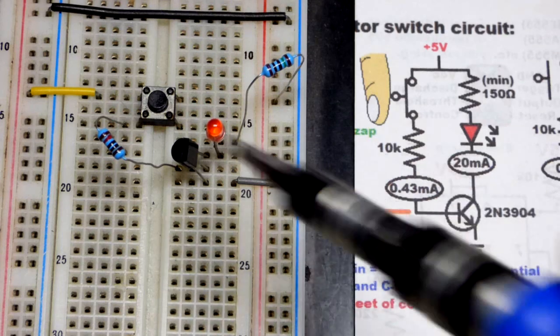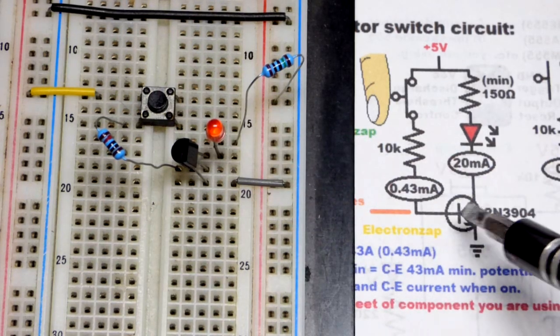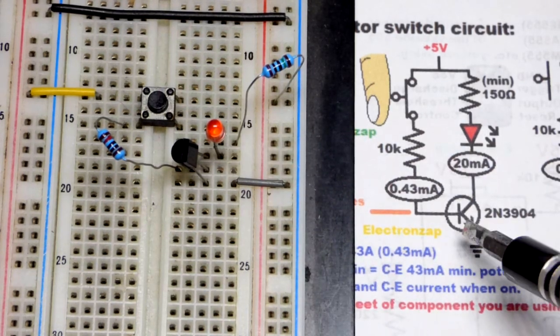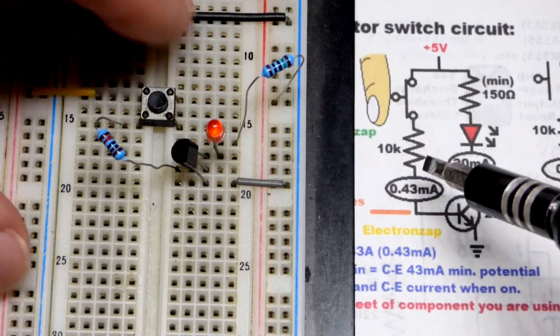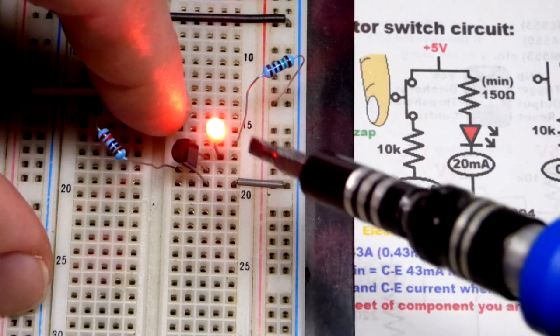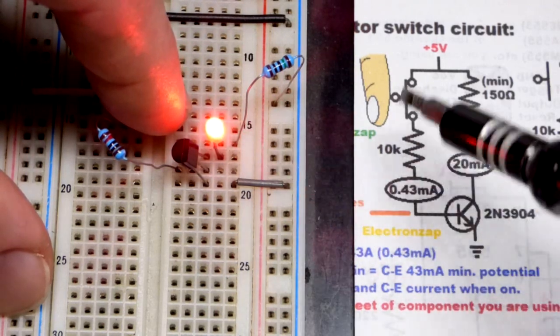Here we zoom in. Right now no current's flowing through the base to emitter which does drop about 0.7 volts. But otherwise we got 5 volts 10 kilo ohm resistor which would make an LED really dim by itself. But you can see the LED is really bright.